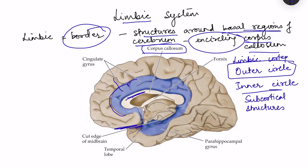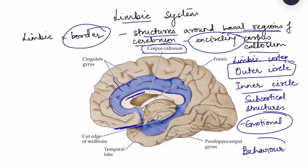The limbic system is important for giving emotional content to our sensations. The affective component of sensation is given by the limbic system, and based on this affective component we make decisions — whether a sensation is harmful, pleasant or unpleasant, or rewarding. If a stimulus is rewarding, we will be motivated to follow that particular behavior. We'll see the functions in detail as we go through the structures and connections.